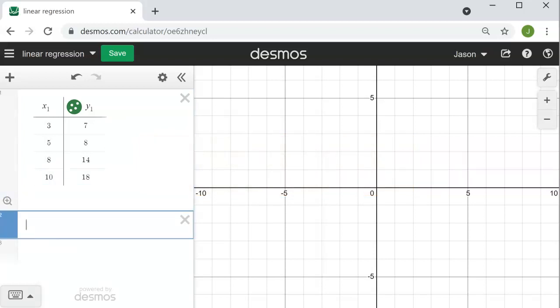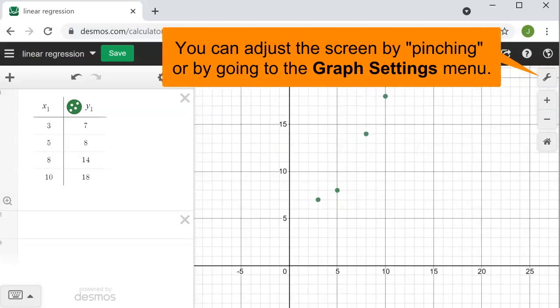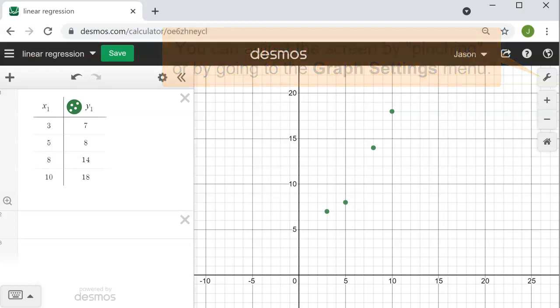I have a table of paired data in Desmos but I can't see it on the graph. I can adjust the screen so that I can see that data and I can see that it's fairly linear.